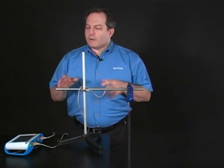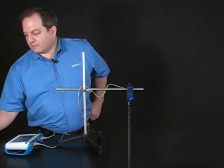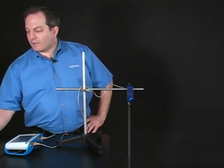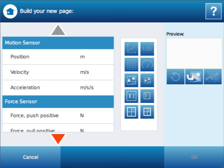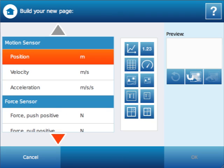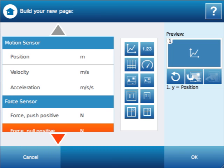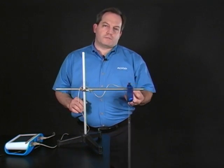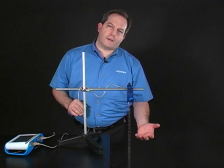And now in this write-up what we do is we have students compare position versus time, force versus time, velocity versus time, and acceleration versus time. So let's go ahead and take a look at one of those graphs. I'm going to take position in a graph. And I'm going to look at force pull positive.